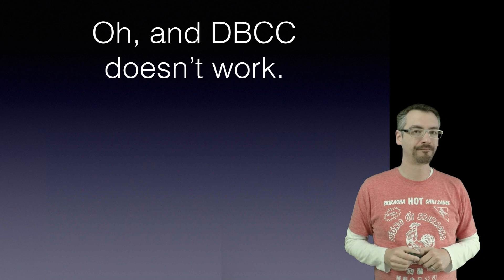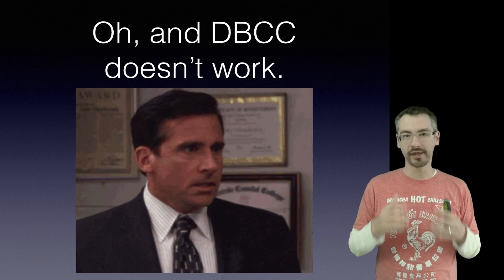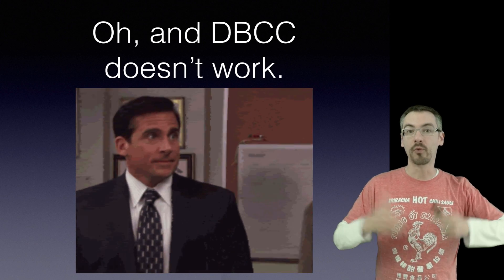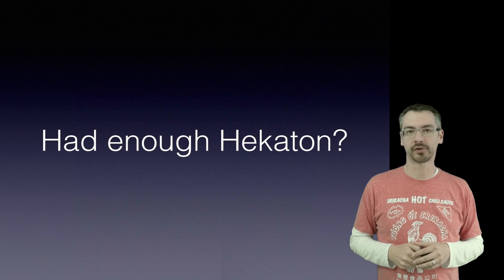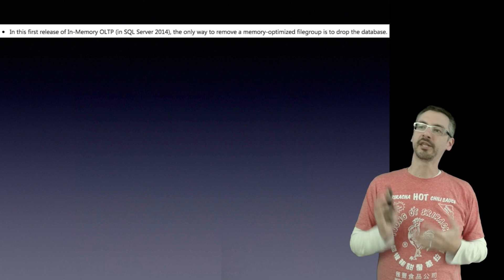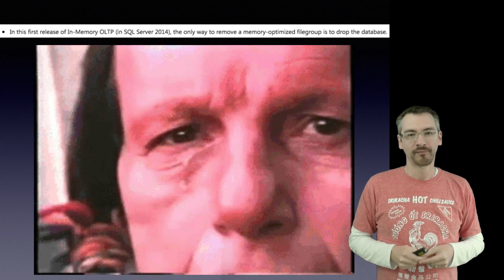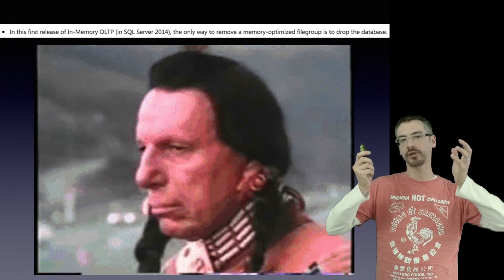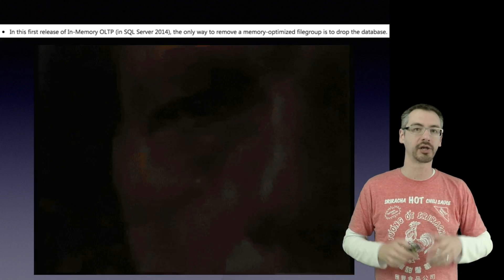Here's something I don't even expect a product to ship with: DBCC CHECKDB does not check anything with your Hekaton data — your in-memory OLTP that's supposedly mission-critical and highly concurrent. You can have corrupt, bad data in there and we have no way to catch it with CHECKDB. And when I give this speech to developers and DBAs, they immediately want to bail out. But it gets even funnier: in this first release of in-memory OLTP, the only way to remove Hekaton is to drop the database. So if a developer decides to play around with it in development — or heaven help you, in production — you're going to be dropping that database, moving all your data out, and creating a new database.